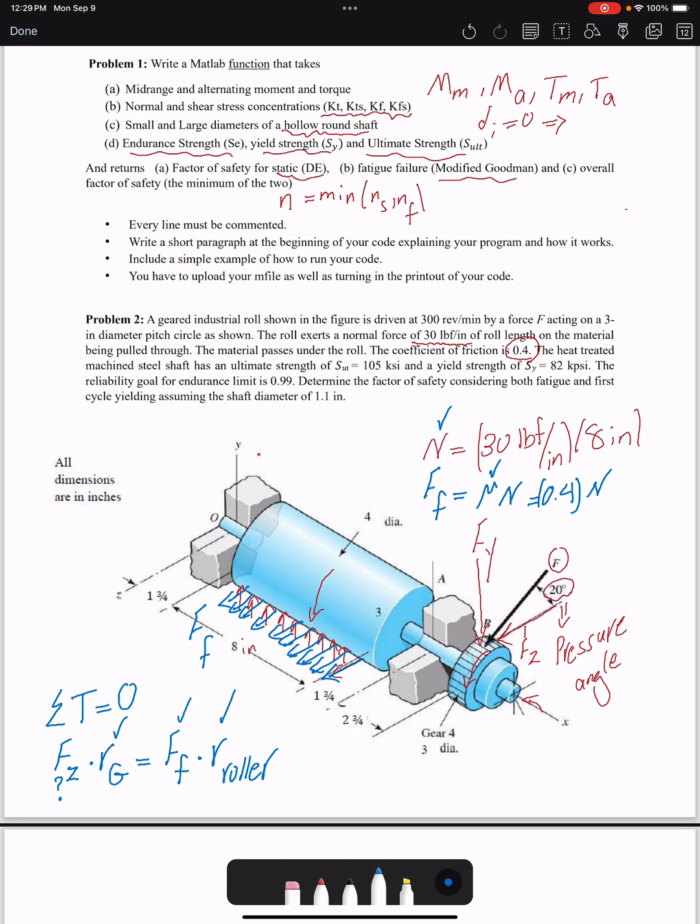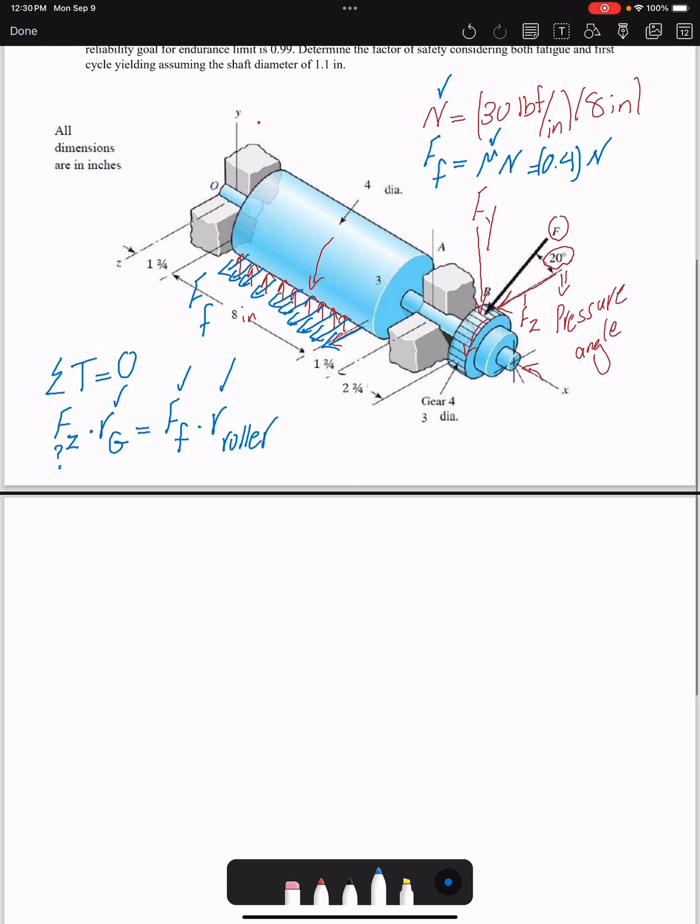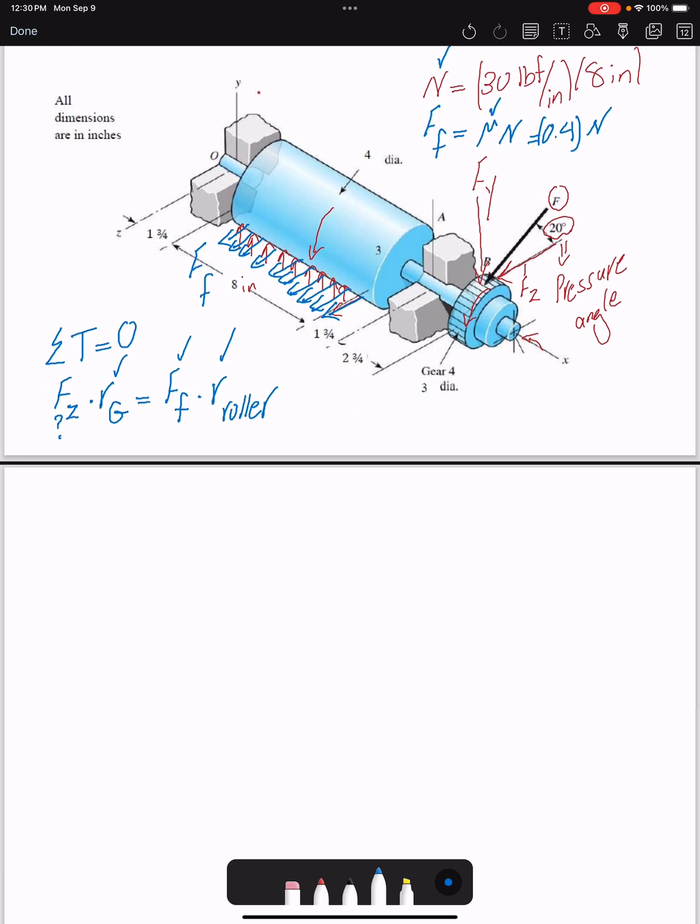I have n and I have mu, which is 0.4. Once I have the value of the friction force and the diameter of the roller, then I can find the missing value, which is force F. FZ I know the summation of torque should be zero.